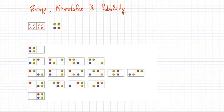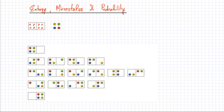In this video lecture, we're going to discuss entropy, microstates, and probability, and we're going to describe probabilistically why high entropy states are more likely — why particles are going to be distributed in a more random fashion rather than in a more organized manner. So why things would tend to go towards disorder rather than towards order, and we're going to use probability to describe why things tend to gain disorder.